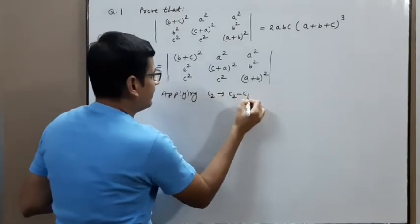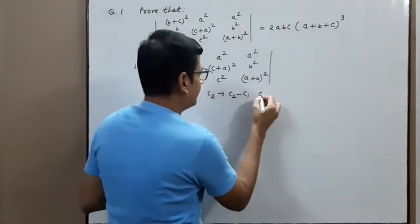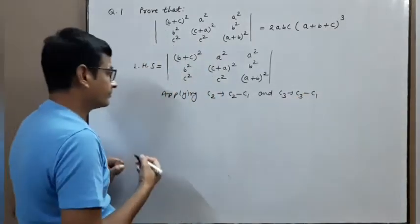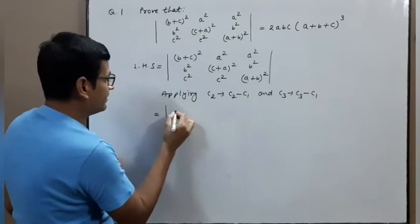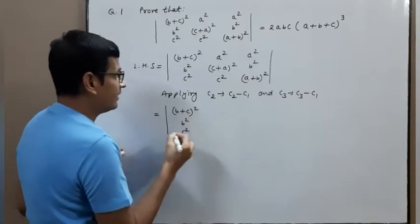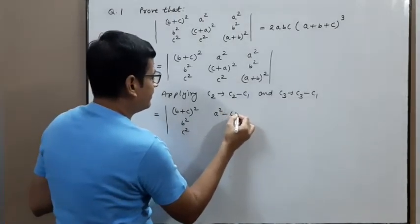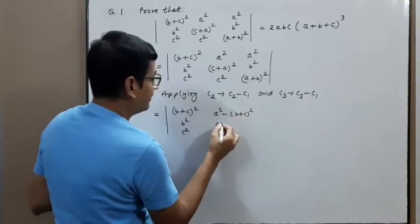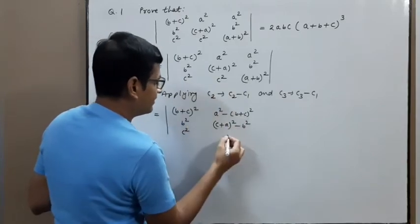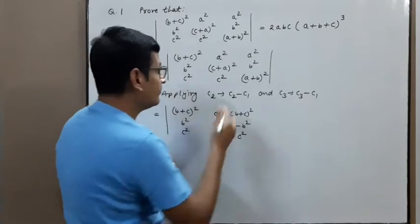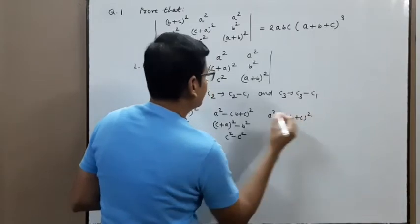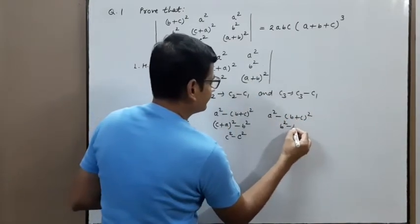Apply C2 → C2 − C1 and C3 → C3 − C1, and write C1 as it is: (b+c)². After the column operations, the entries simplify. In C2: a² minus (b+c)² gives factor (a+b+c)(a−b−c), and b² minus b² gives zero.